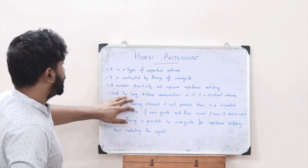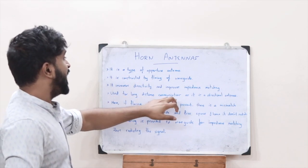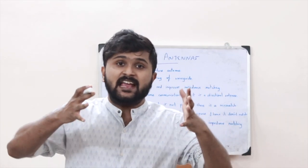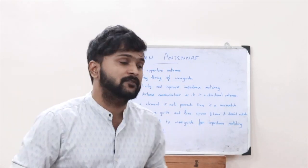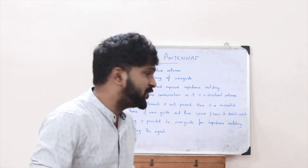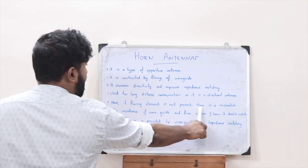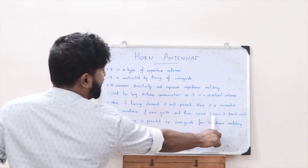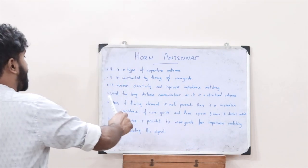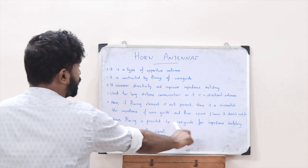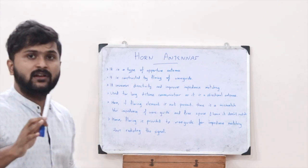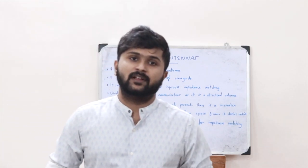Because of all these properties, it is used for long distance communications as it is a directional antenna that directs in a particular direction only. If the flaring element is not present, there is a mismatch between the impedance of the waveguide and free space, and hence it does not radiate. Therefore a flaring is provided to the waveguide for impedance matching, thus radiating the particular signal — that is why we need the flaring element.